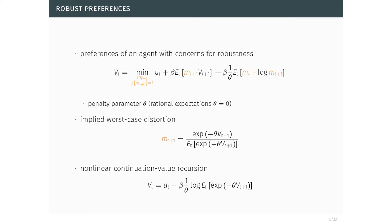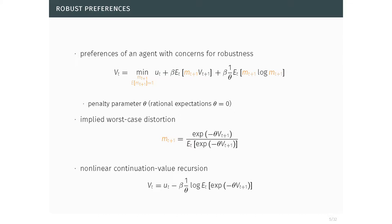The solution to this minimization problem implies a distorted probability measure — the worst-case measure — that overweights bad states, meaning low continuation value states. When you plug the solution back into the recursion you get a nonlinear continuation value recursion with a log-exponential form. What we want to do now is provide more flexibility in the parameter theta that controls the magnitude of the distortion. Think about a model where equilibrium dynamics are given by a law of motion for x, shocked by standard normal shocks w.